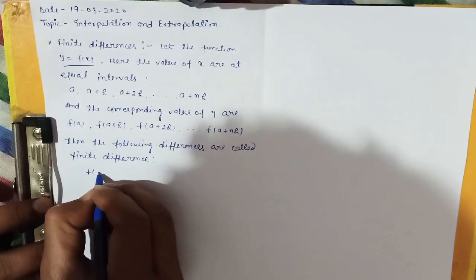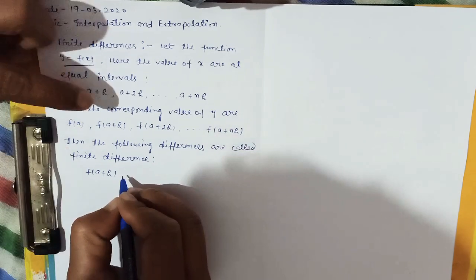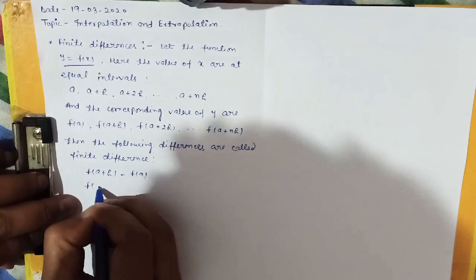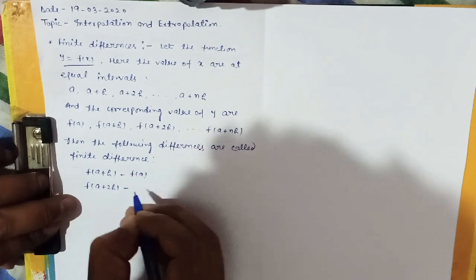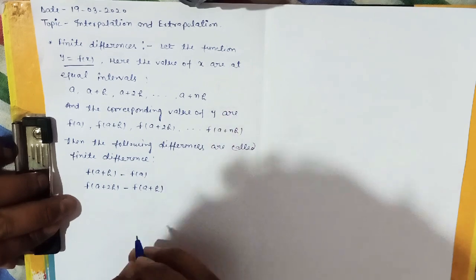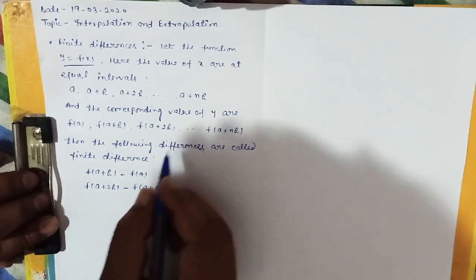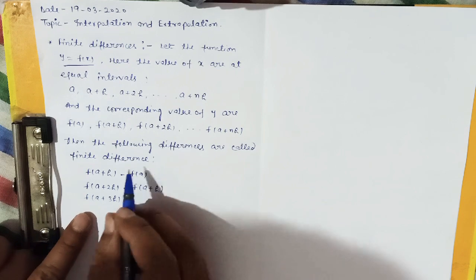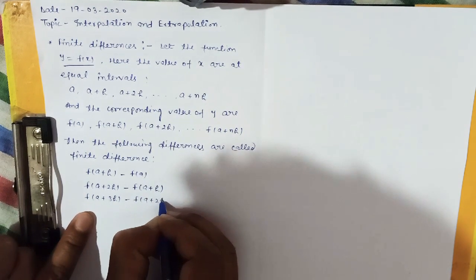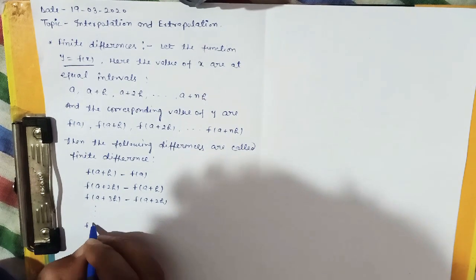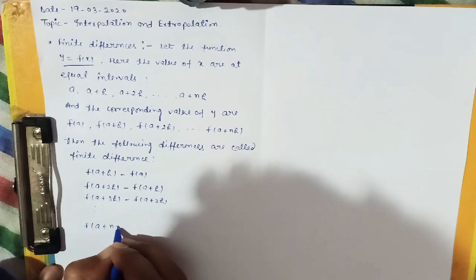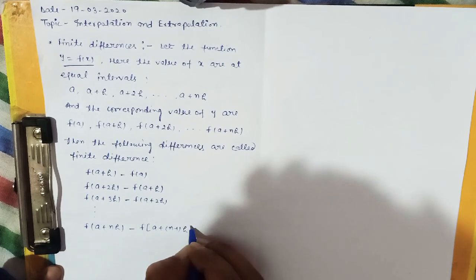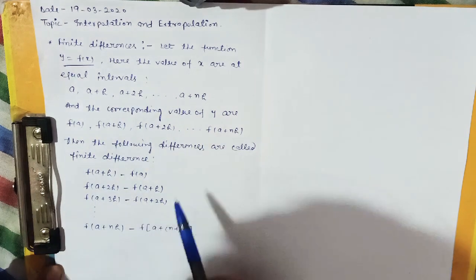The finite differences are: f(a+h) minus f(a), then f(a+2h) minus f(a+h), then f(a+3h) minus f(a+2h), and so on, up to f(a+nh) minus f(a+(n-1)h). This is the basic concept of finite difference.